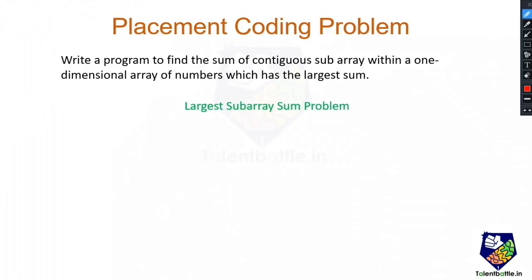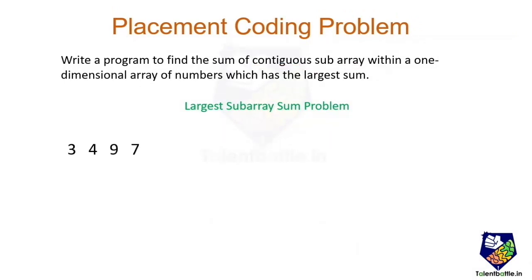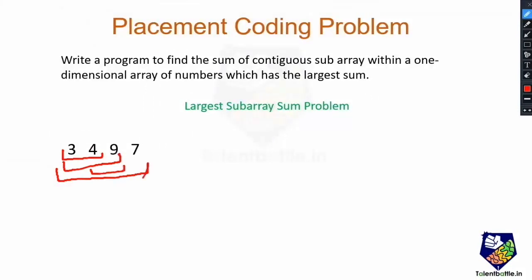Before discussing the solution, if anyone doesn't know the meaning of the term 'contiguous subarray', let us first discuss that. A subarray means a section or part of the array. For example, if we have the array [3, 4, 9, 7], then 3,4 is a separate subarray; 3,4,9 is a separate subarray; 4,9 is a separate subarray; and the whole array 3,4,9,7 is also a subarray. There can be many such subarrays.